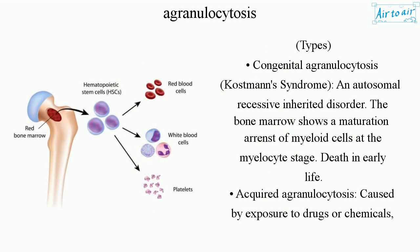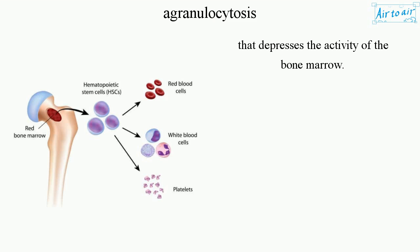Types: Congenital agranulocytosis, or Kostmann's syndrome, is an autosomal recessive inherited disorder where the bone marrow shows a maturation arrest of myeloid cells at the myelocyte stage, leading to death in early life. Acquired agranulocytosis is caused by exposure to drugs or chemicals that depress the activity of the bone marrow.